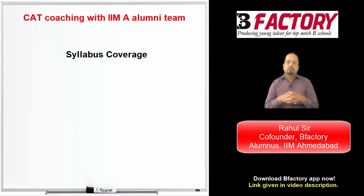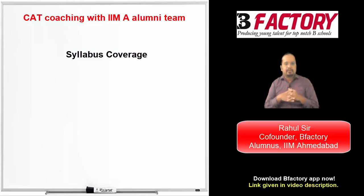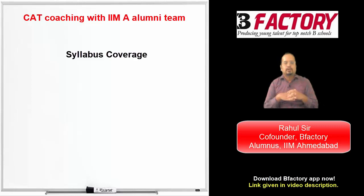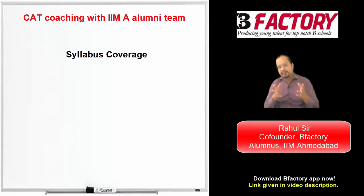Aptitude preparation for a competitive exam means you practice a number of questions of the type which come in the exam, learn the best methods for them, and then in the exam when similar questions appear, you are able to crack them in the least possible time. The CAT exam has three sections: Verbal Ability, Quantitative Aptitude, and Data Interpretation and Logical Reasoning.